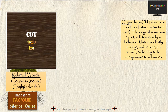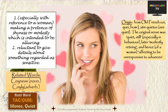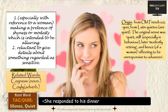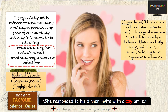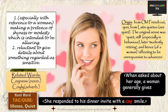The next word based on the root is COY. The word has come from Latin to English via French and is a phonetic spelling of 'quiet', though the meaning changed over time. Coy is used mostly to describe a woman who is pretending to be shy or modest, often to attract attention or appear attractive. For instance, she responded to his dinner invite with a coy smile. In a secondary meaning, we use coy when someone is reluctant to give details about something sensitive — like when asked about her age, a woman generally gives the coy response. The related noun is COYNESS.